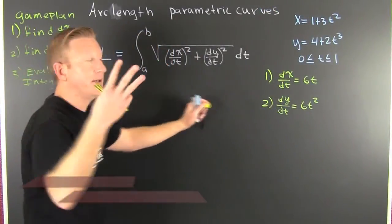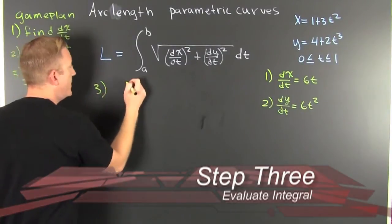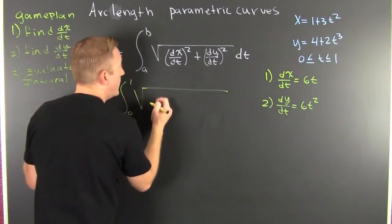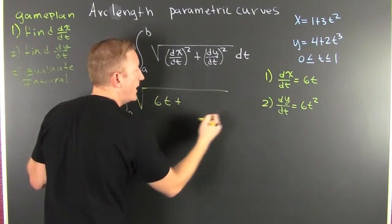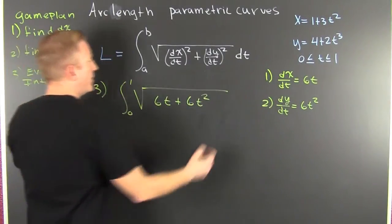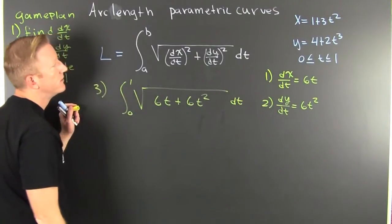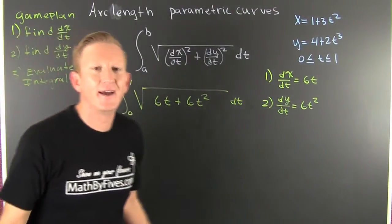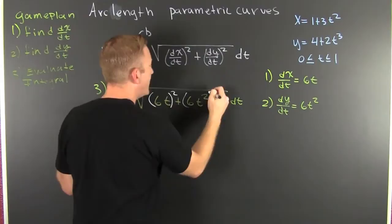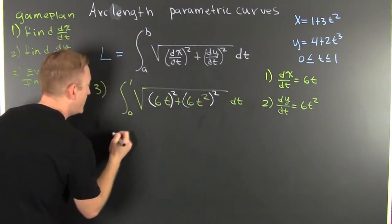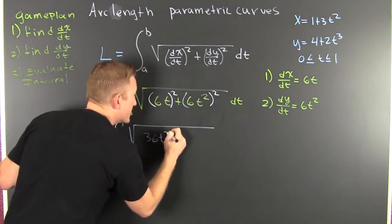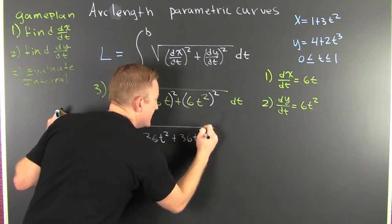Step 3: we're going to evaluate the integral. This is the integral from 0 to 1 of the square root of dx/dt plus dy/dt, dt. Wait — something isn't looking right. We forgot to square the differentials. So I need to square this term and square this term. Now I proceed: this is the integral from 0 to 1 of the square root of 36t squared plus 36t to the fourth, dt.